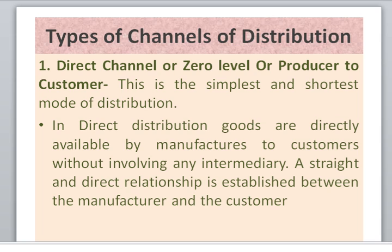First is direct or zero level channel. Zero level means the company is selling directly to the consumer. This is a simple and short mode of distribution. Goods are made directly available by the manufacturer to consumers without involving any intermediaries. A straight and direct relationship is established between the manufacturer and the customer.